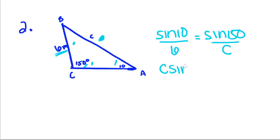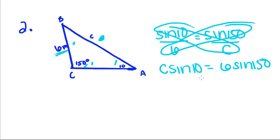Multiply both sides by C. Sine of 10 is equal to 6 sine of 150, because we cross multiplied. And we're going to get C is equal to 6 sine of 150 over sine of 10.